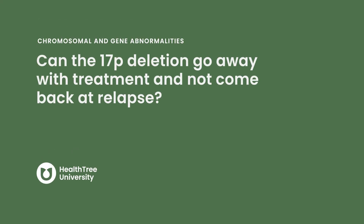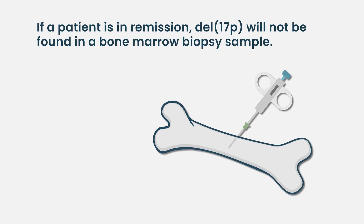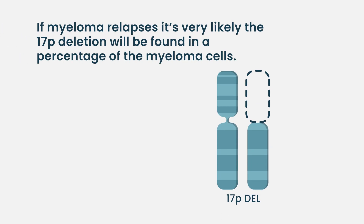Can the 17P deletion go away with treatment and not come back at relapse? That would be fantastic, but we don't think that's what occurs. When somebody has 17P deletion, we always believe it's still there. We might not find it on a bone marrow biopsy if we've achieved deep response and MRD negativity — there may be no myeloma cells to detect it in. However, if there is a relapse in the future, we suspect we would find the 17P deletion again.